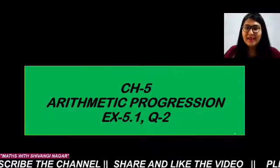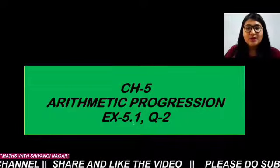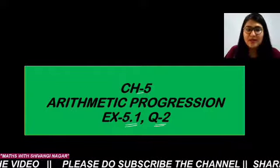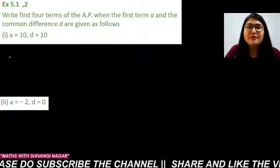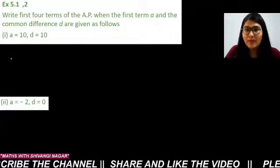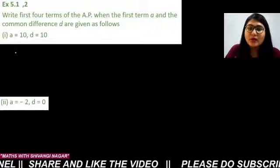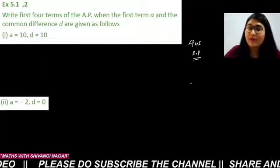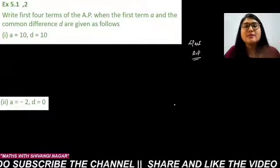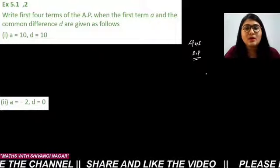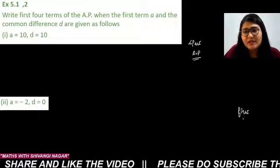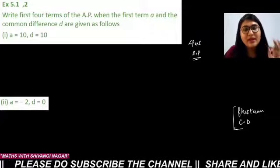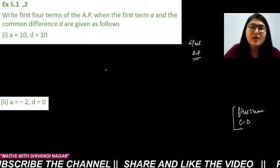Hello everyone, welcome back to my YouTube channel. In this video today I'm going to discuss question number 2 of chapter 5, Arithmetic Progressions, exercise 5.1. The question says: find and write the first four terms of an AP when the first term 'a' and the common difference 'd' is given. The minimum requirement to form an AP is that we need the first term and the common difference.